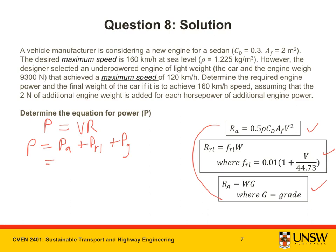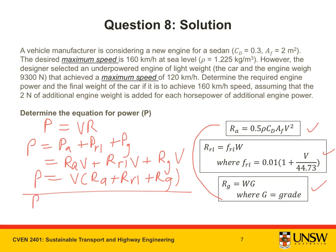Likewise, P_A can be broken down to R_A times V. P_RL can be broken down into R_RL times V, and likewise for P_G. We can take out the V. Now P_max should not include R_G. Therefore, it is equal to V(R_A plus R_RL).